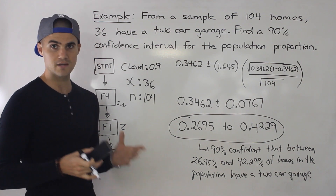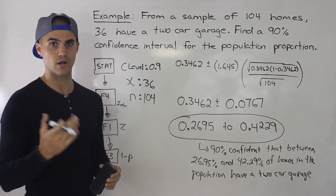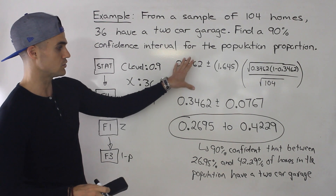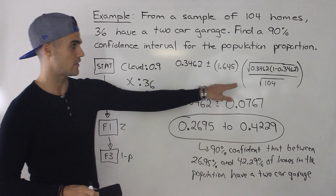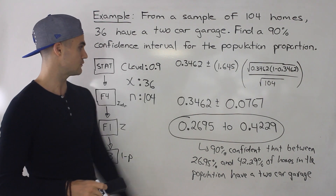So those are two different ways to get the confidence interval for a population proportion — manually, where the margin of error formula is slightly different, or with the calculator.